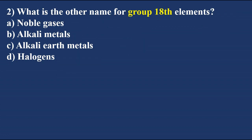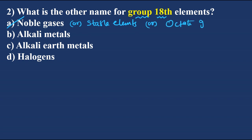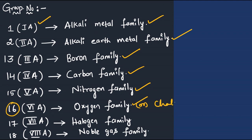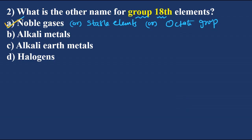What is the other name of group 18? Group 18 is called noble gas, or stable elements group, or octet group. You have to remember: 1A is alkali metal family, 2A is alkali earth metal, 3A boron family, carbon family, nitrogen family, oxygen family (16th - chalcogens), 17th is halogens, and 18th is noble gas. So the answer is option A.